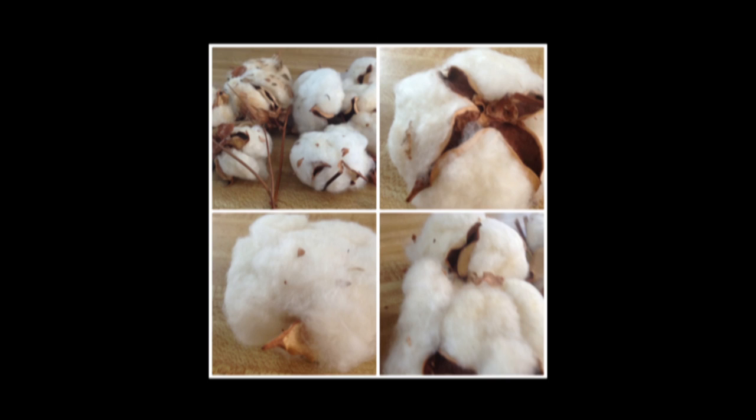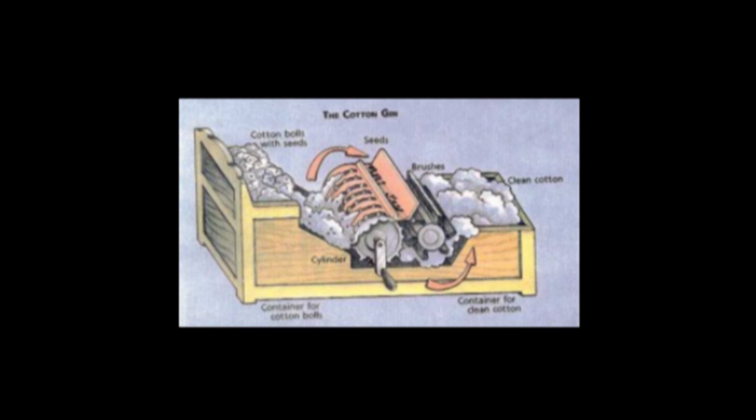While in Georgia, Whitney learned that southern planters were in need of a way of making the growing of cotton profitable. Long staple cotton, which was easy to separate from its seeds, could be grown only in coastal areas. But one type that grew inland had sticky green seeds that were incredibly time-consuming to pick off the cotton balls.